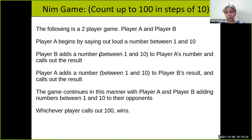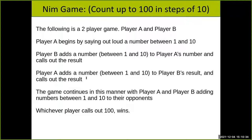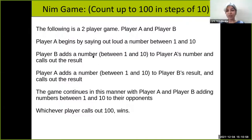Why did Rossi win? What was it that made him win? Was there any possibility that Mrunal could have won? One hypothesis is that because Rossi was adding bigger numbers he won. Ashu suggests that Rossi was smart enough to add the bigger numbers while Mrunal was adding the smaller numbers — the strategy of adding numbers mostly around ten made him win.